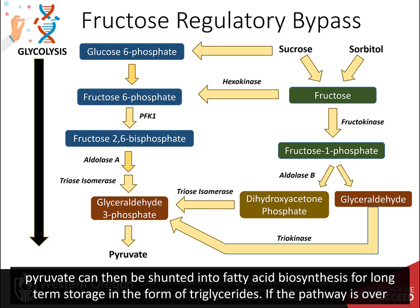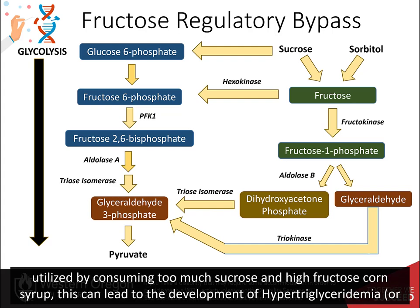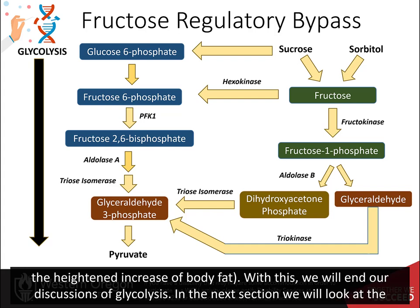If this pathway is overutilized by consuming too much sucrose and high fructose corn syrup, this can lead to the development of hypertriglyceridemia or heightened increase of body fat. With this, we will end our discussions of glycolysis. In the next section, we will look at the complementary and opposite pathway of gluconeogenesis.